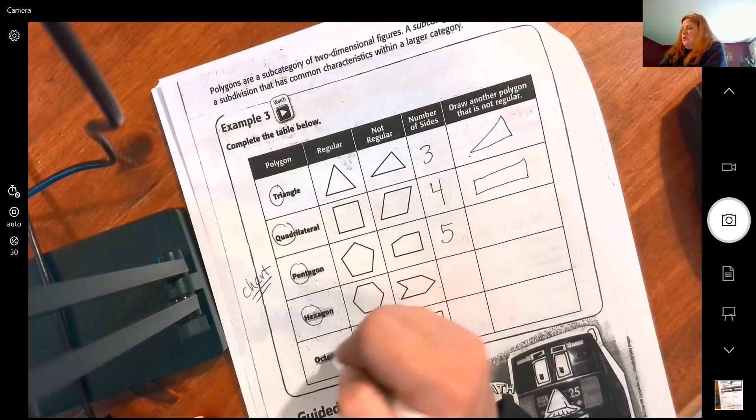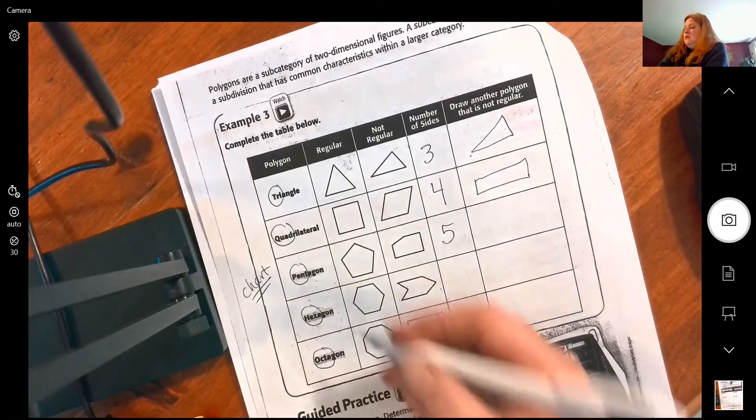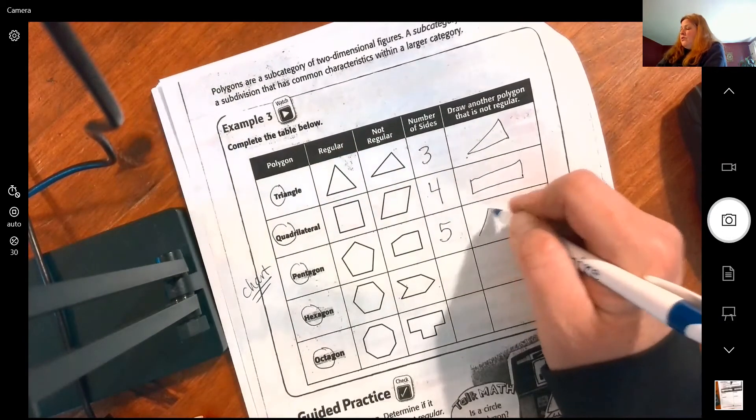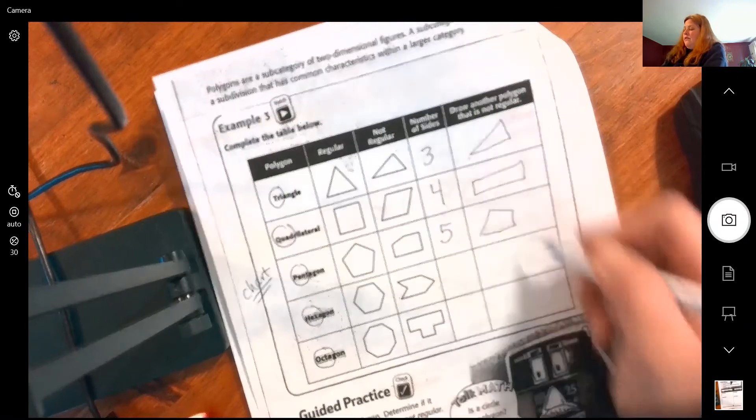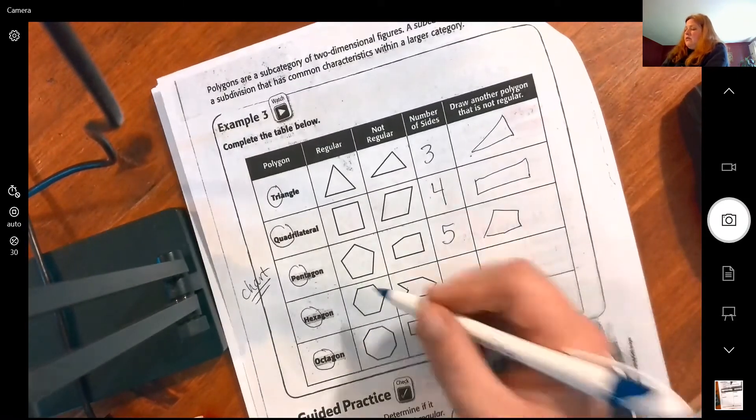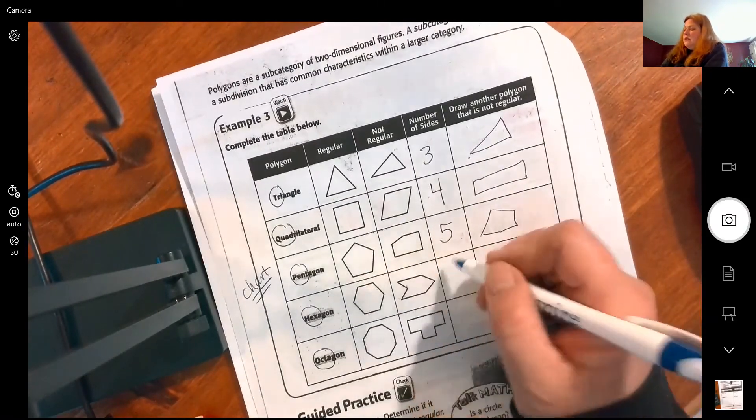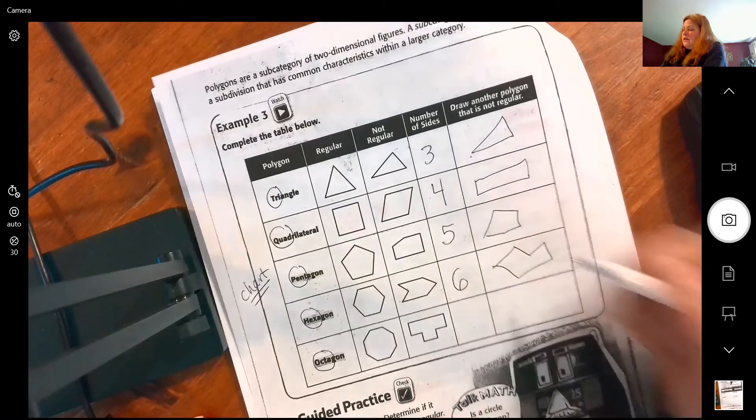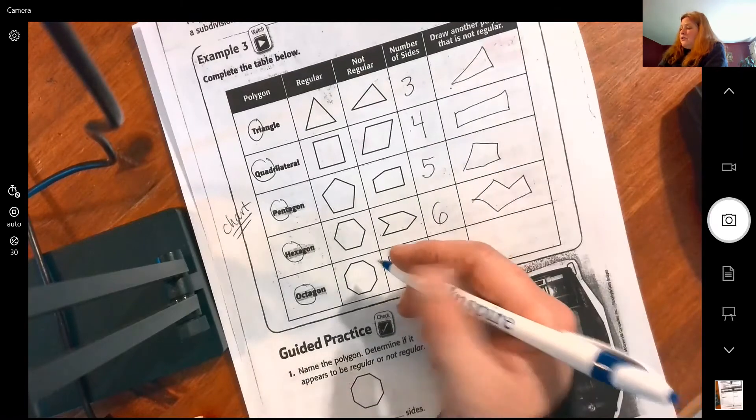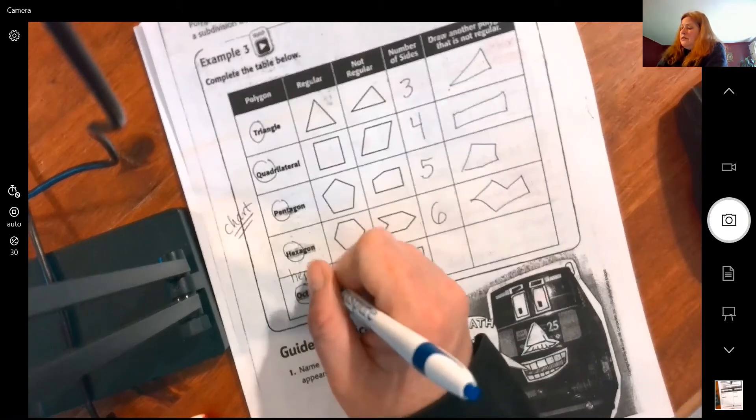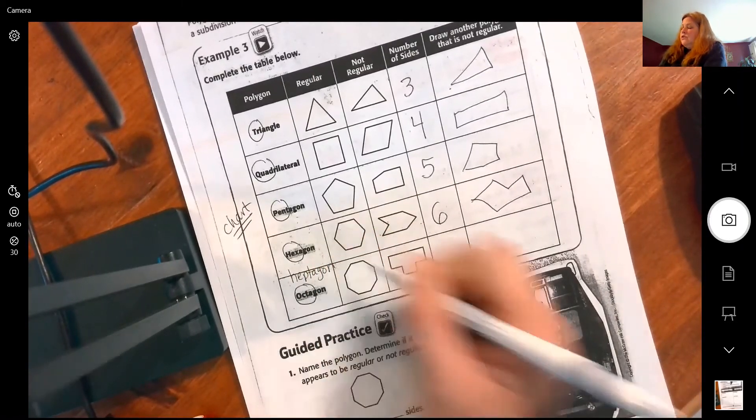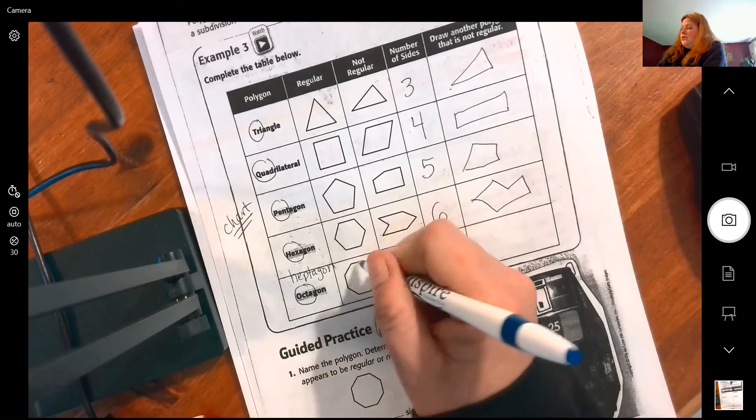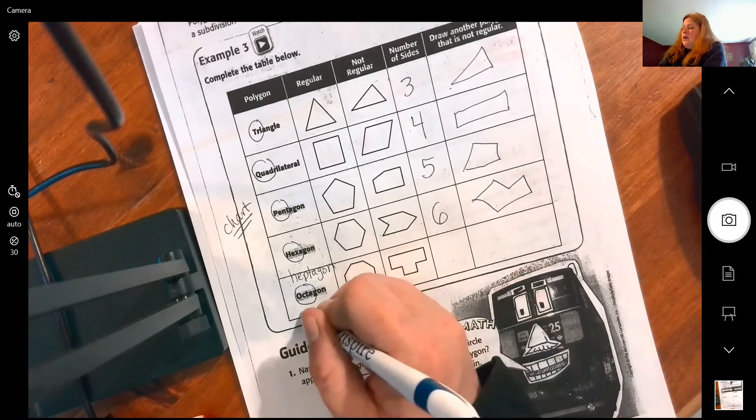Five: one, two, three, four, five. Hexagon: one, two, three, four, five, six. Octagon, there is a heptagon just didn't put it in here: one, two, three, four, five, six, seven, eight. Think octopus with eight legs.